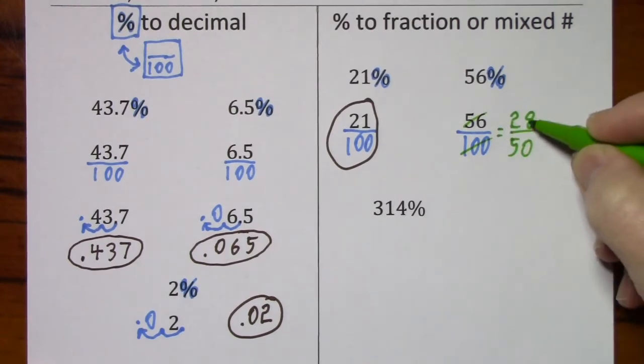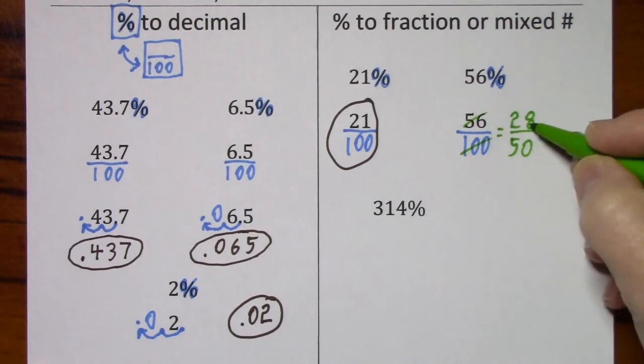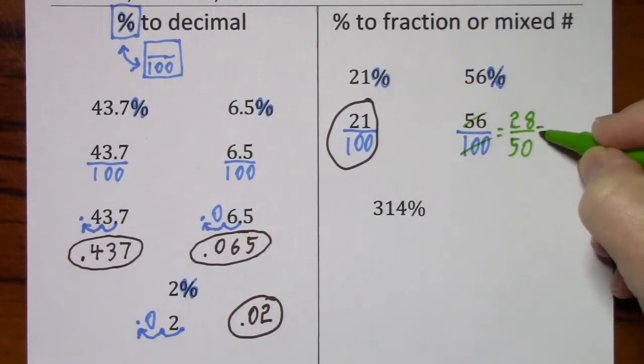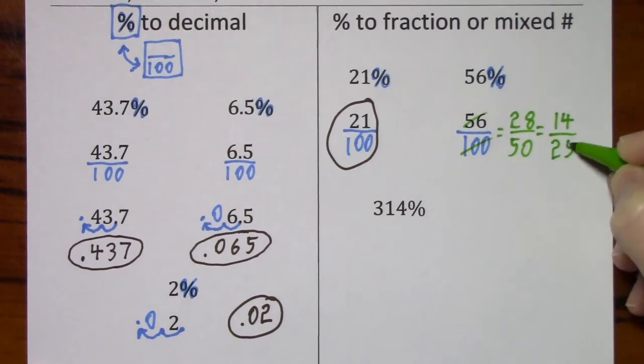And half of 100 is 50. And I still have a common factor of 2. Half of 28 is 14. Half of 50 is 25. And now there's no more common factor, so we've simplified this as far as we can.